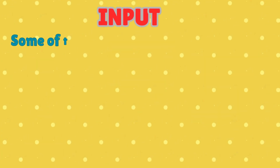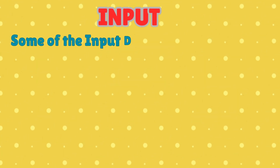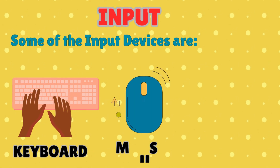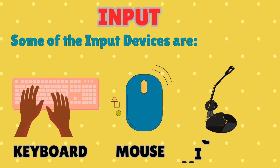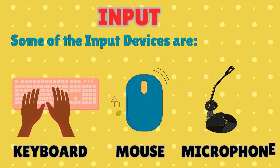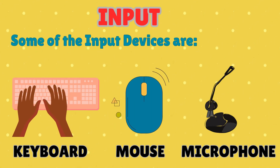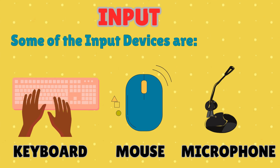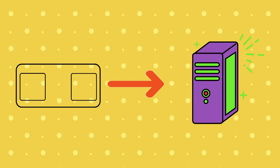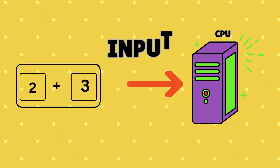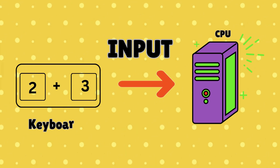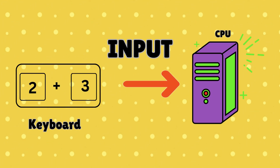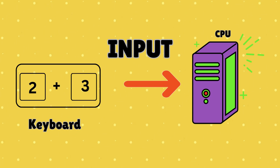For example, typing on a keyboard, clicking a mouse, or speaking into a microphone are all examples of inputs. When you type 2 plus 3 on the keyboard, that is input.